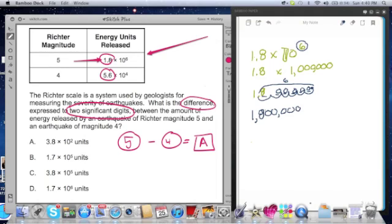Well this is the millions and this is 100,000, so I could say this is 1,800,000 units of energy released. Well what about the other one? If it was 5, the 4 earthquake is equal to 5.6 times 10 to the 4th.